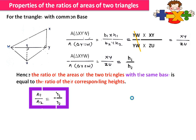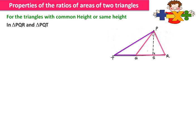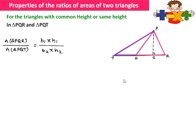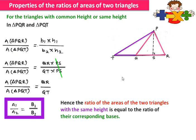So A1 upon A2 equals H1 upon H2. Now for triangles with the common height: consider triangle PQR and triangle PQT. For triangle PQR the base is QR and the height is PS, and for triangle PQT the base is QT and the height is also PS. So area of PQR upon area of PQT equals (QR × PS) / (QT × PS). PS cancels, giving QR upon QT, which is B1 upon B2. Hence the ratio of the areas of two triangles with the same height equals the ratio of their corresponding bases.